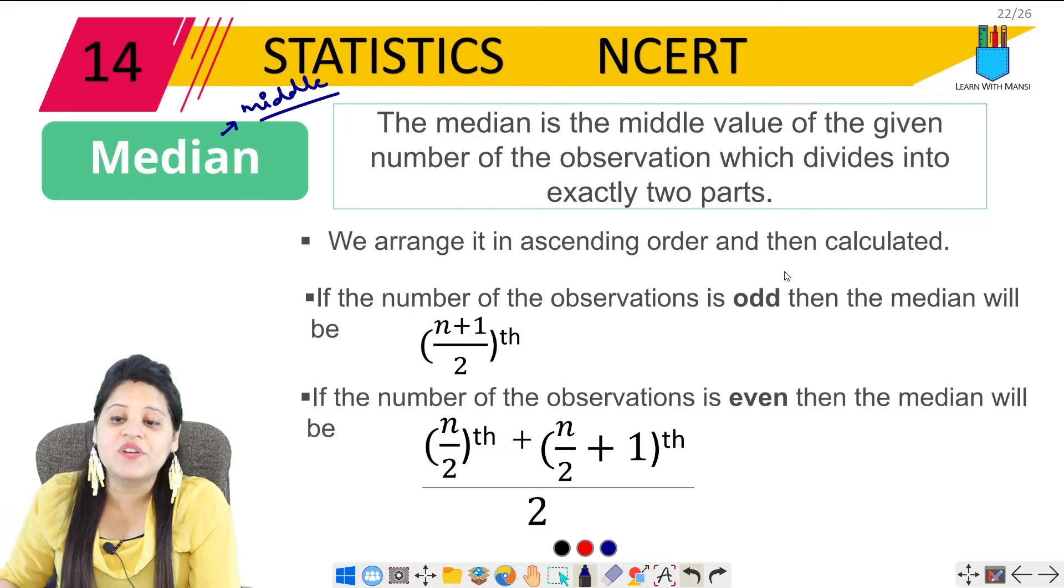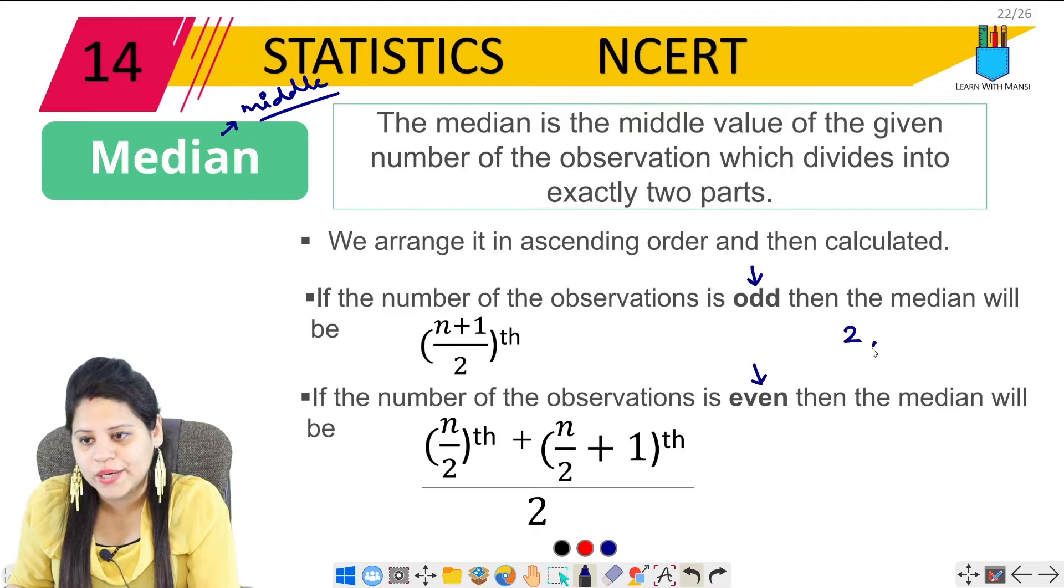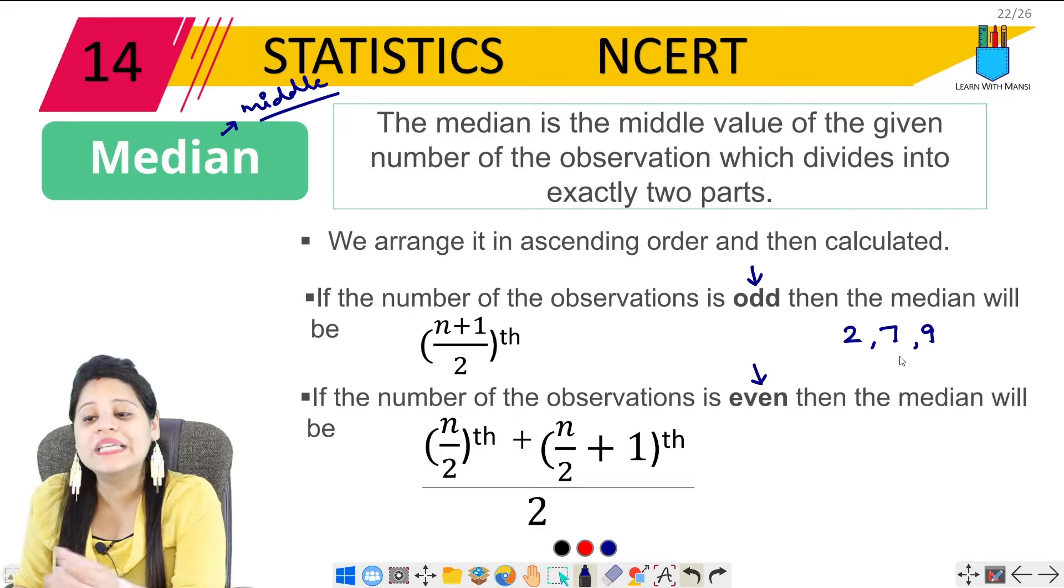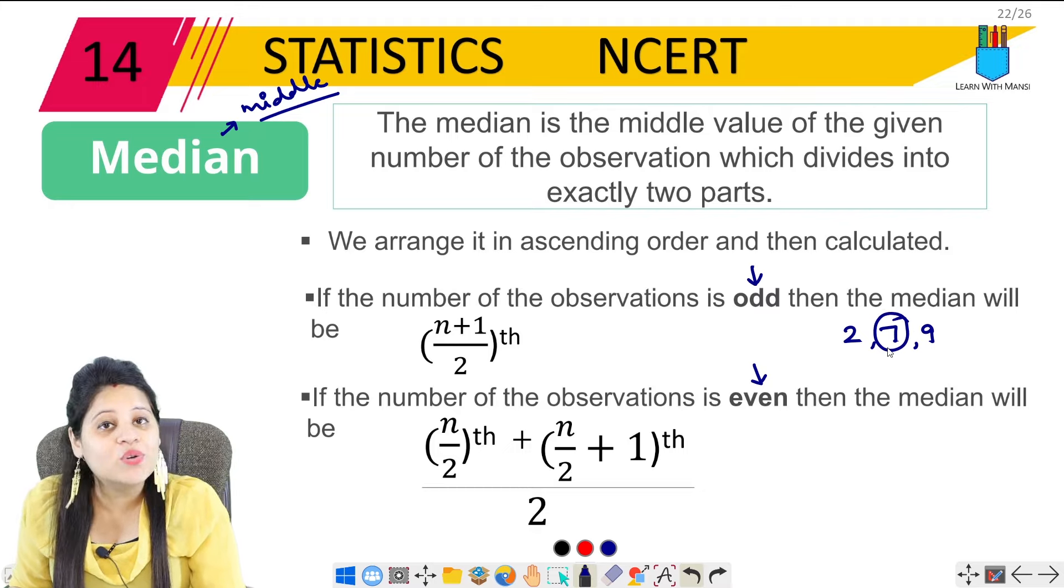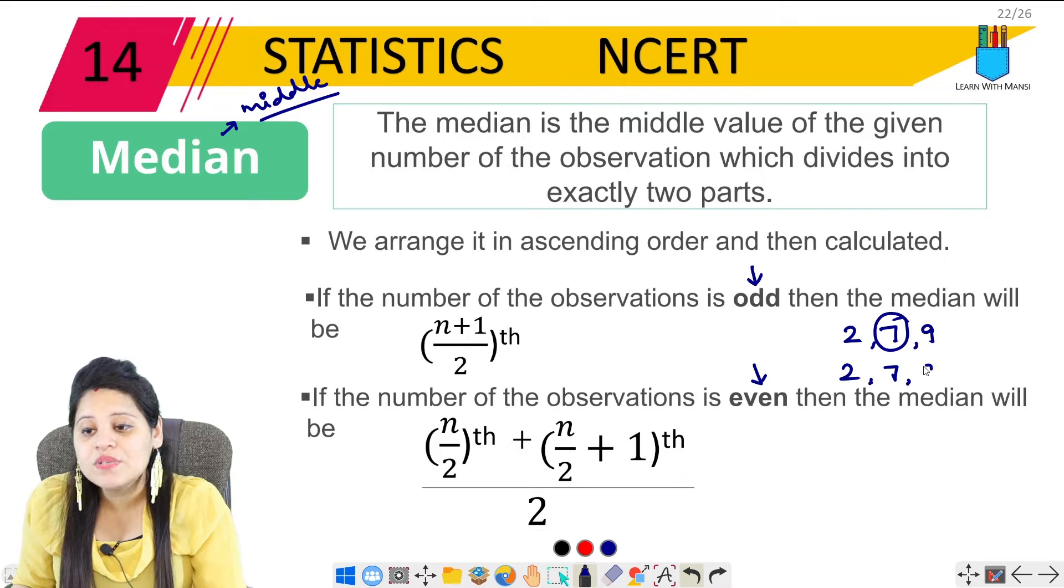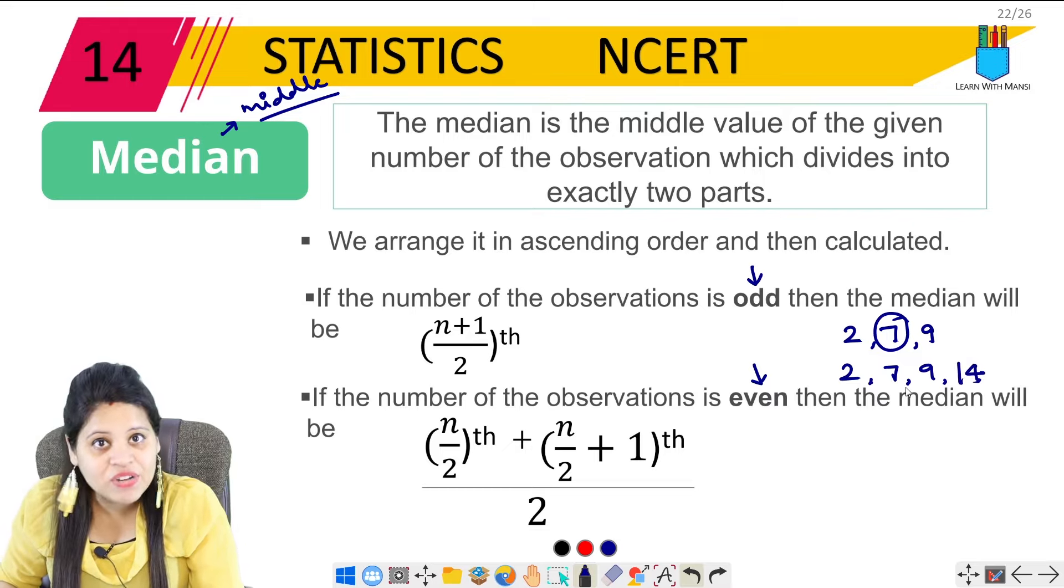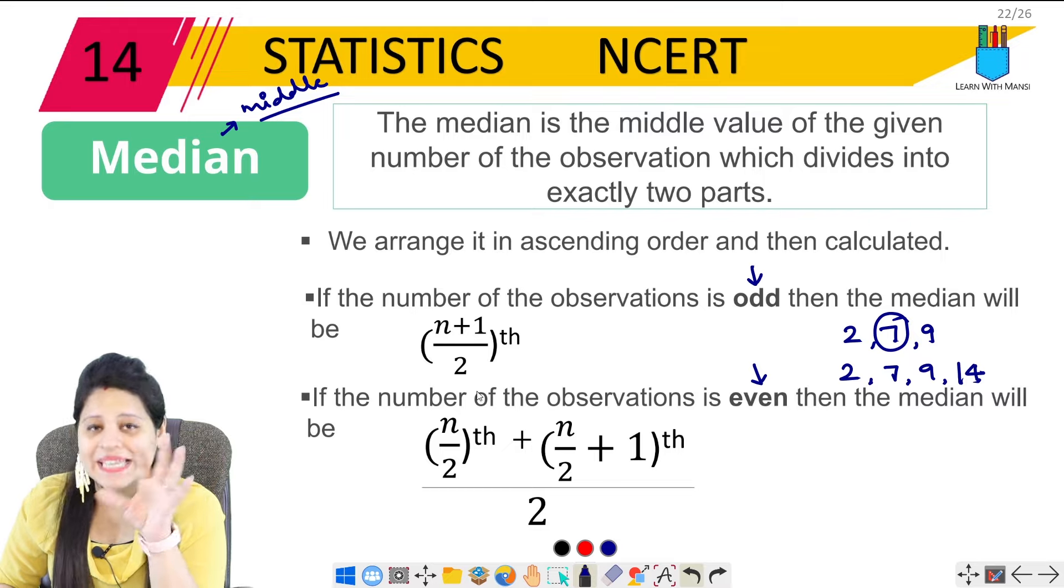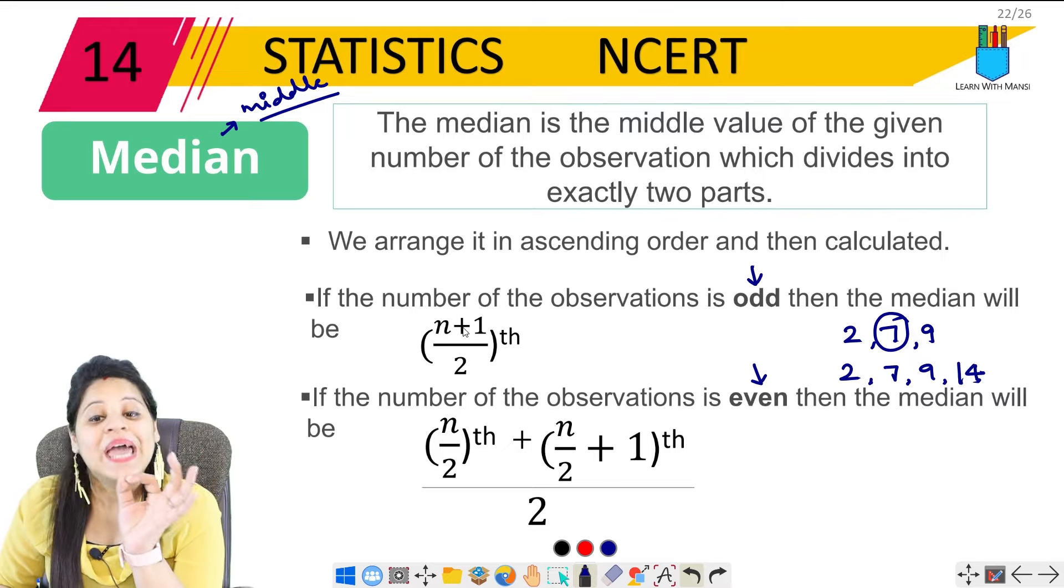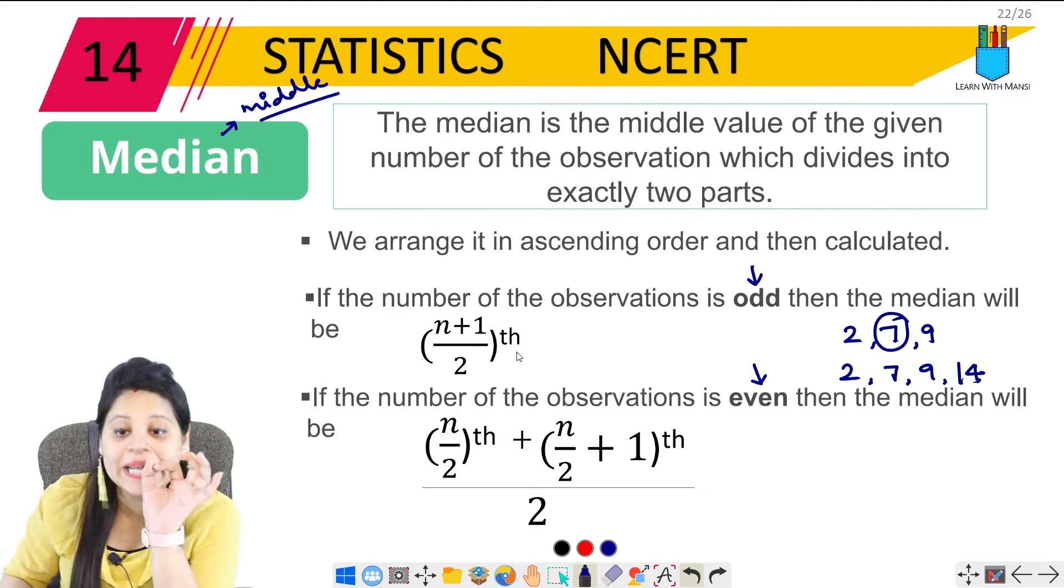We arrange it in ascending order and then calculate it. So first we always keep the data in ascending order, arrange and then we remove the median. Now see here, there are two things: the number of observations is either odd or even. If it is odd, then it is very easy to remove middle value.